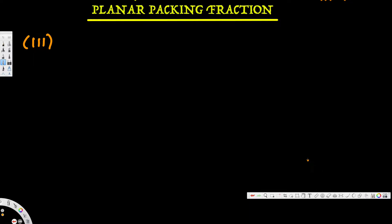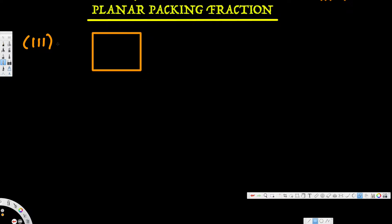Hey, what's going on guys. In this video we are going to see how to calculate planar packing fraction for a given Miller indices. The Miller indices given is (1 1 1) and we are going to calculate the planar packing fraction for that. Before we do that, let's go ahead and draw the diagram to see how the (1 1 1) plane looks.